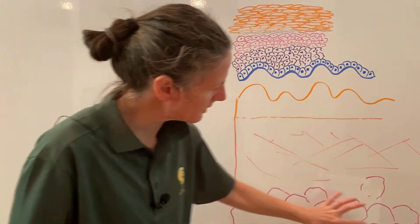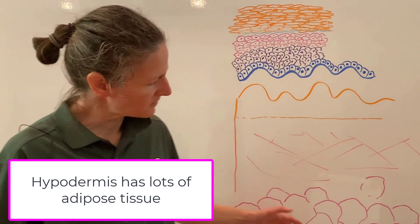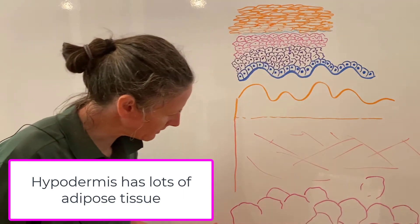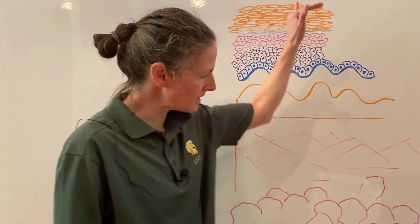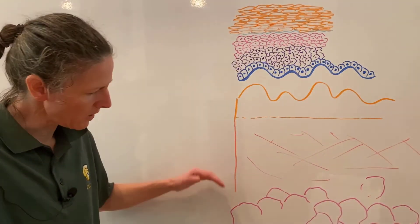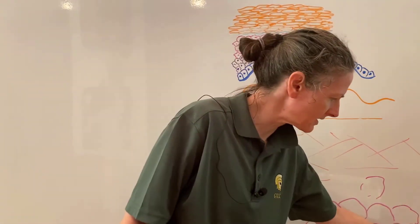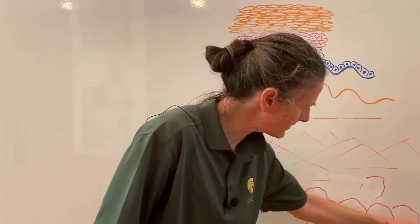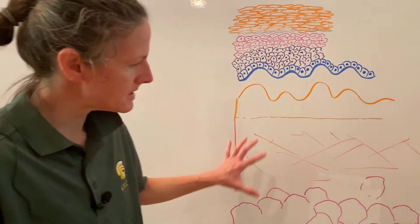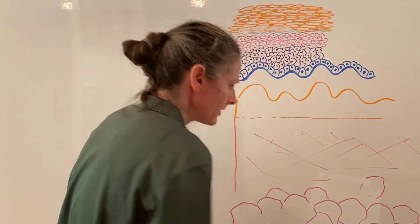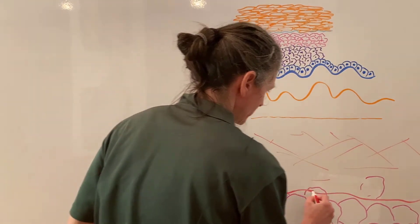Below the dermis is the hypodermis, mostly adipose tissue — specialized cells that store fat as triglycerides. This is also called the subcutaneous layer. It is not part of the integument, but connects the cutaneous membrane to underlying structures. The border between subcutaneous and cutaneous membrane is not very sharp, and there are lots of blood vessels running through it, forming a plexus along that border.